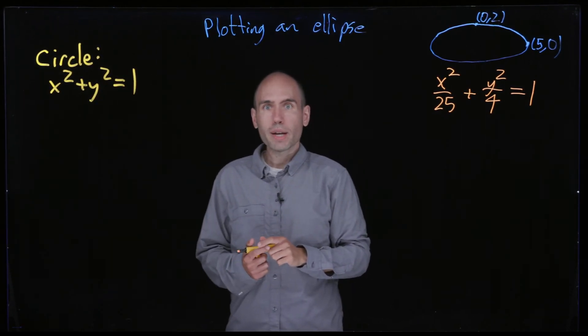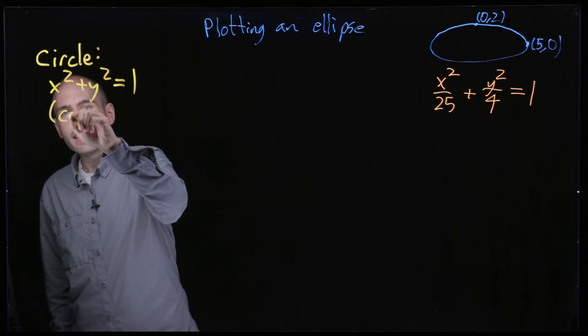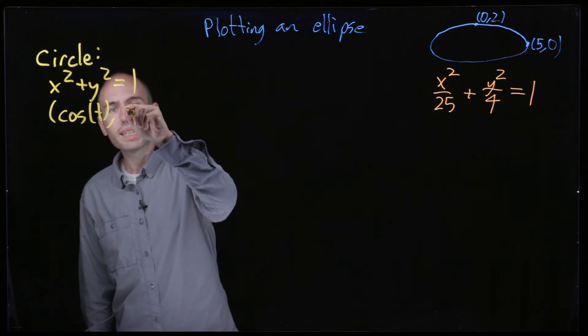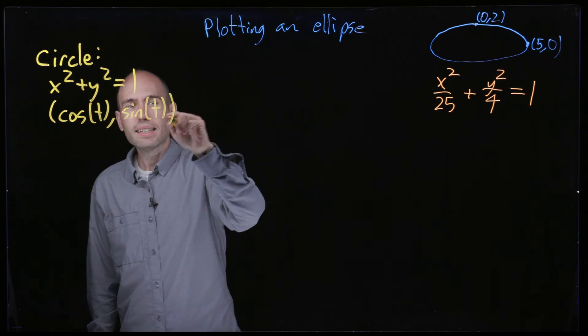And on the other hand, another way to think about a circle is it's parametrized, and this should be familiar to you if you've taken MATH2D. It's parametrized by (cosine t, sine t).